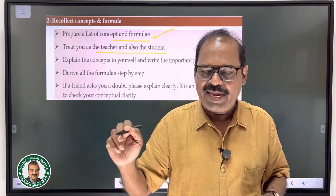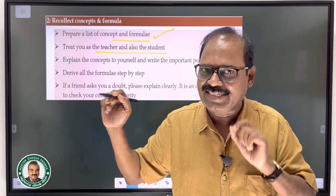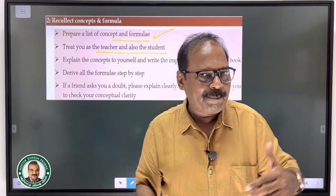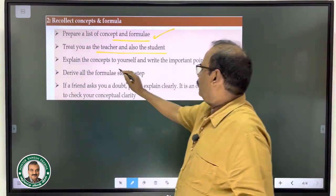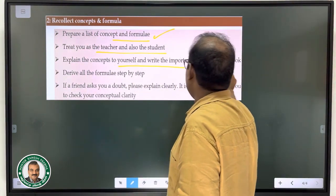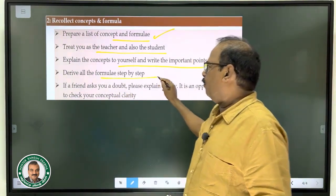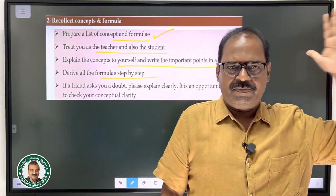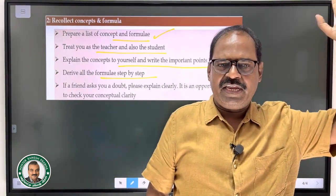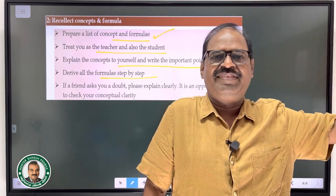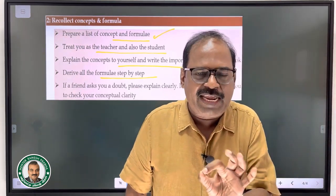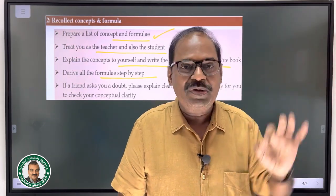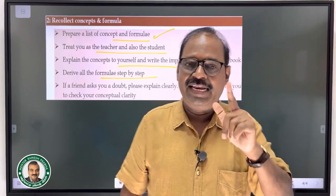The electric field due to a dipole at a point on the axial line — just don't write the formula, derive that. Complete derivation, the formula. Do all the concepts, all the formulas. You are ready with the concepts, you have got everything in your memory, and you understand all the steps.